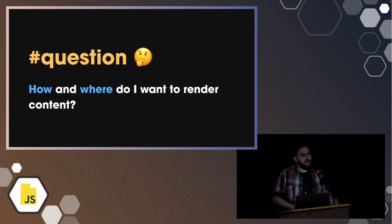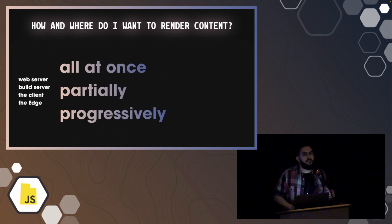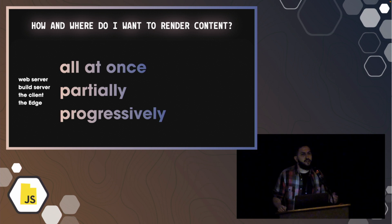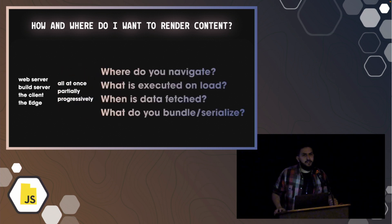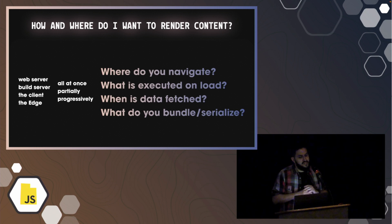It all starts with the question of how and where we want to render some content. Because these days, for example, we can render things on a web server, on a build server, at the browser, and even at the edge server. We might have different strategies for doing so — rendering everything all at once, or going with some approach like partially or progressively doing things. Not to mention questions like where exactly do we do navigation, is that on the server or on the client, what is exactly executed when your app loads, where do you do data fetching, what goes into your application bundle, or what is exactly serialized and sent over the wire.